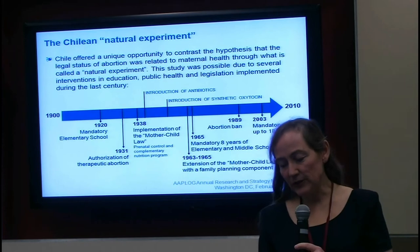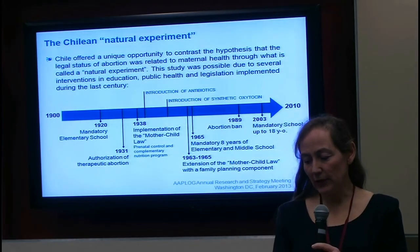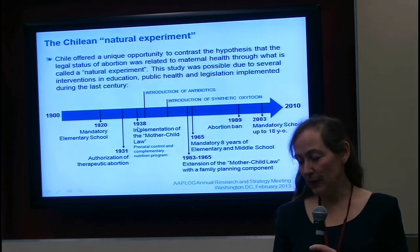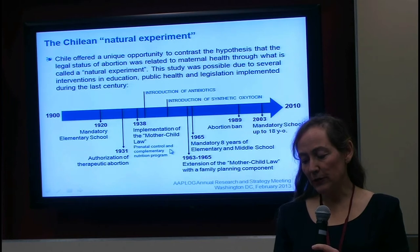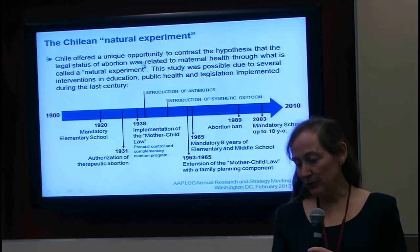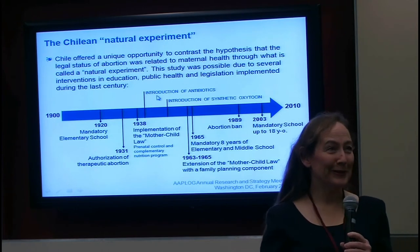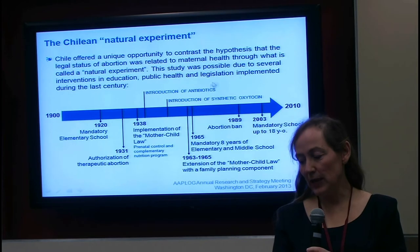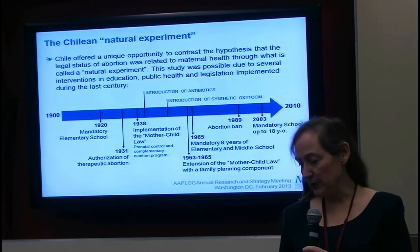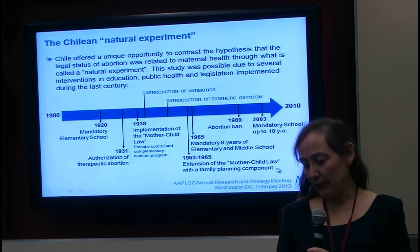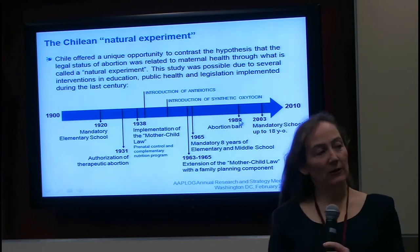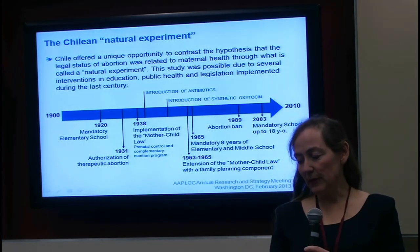We have a number of different interventions that happened between 1900 and 2010, including mandatory elementary school education, authorization of therapeutic abortion — when abortion was made legal — the implementation of the mother-child law providing prenatal services and complementary nutrition programs, the introduction of antibiotics, the introduction of oxytocin for reduction of maternal mortality from obstructive labor and postpartum hemorrhage, the extension of the mother-child law with a family planning component in 1963, eight years of mandatory elementary and middle school education, and then in 1989, the ban on abortion.